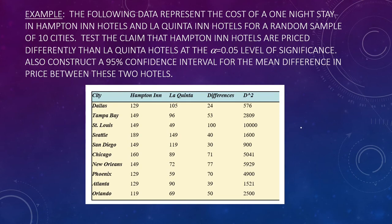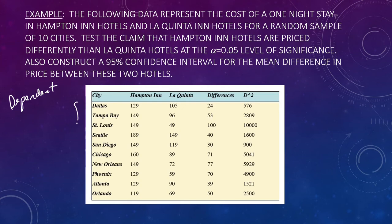Let's look at example one. The following data represents the cost of a one-night stay in Hampton Inn hotels and La Quinta Inn hotels for a random sample of 10 cities. We need to test the claim that Hampton Inn hotels are priced differently than La Quinta Inn hotels at the α = 0.05 level of significance. These are definitely dependent samples because we're talking about the same cities — the cities are the same, so the samples are paired with one another.